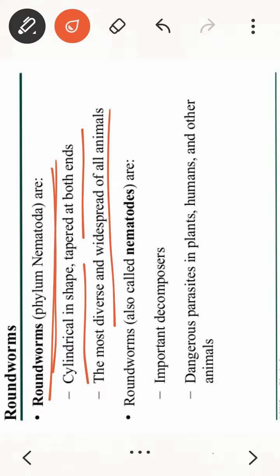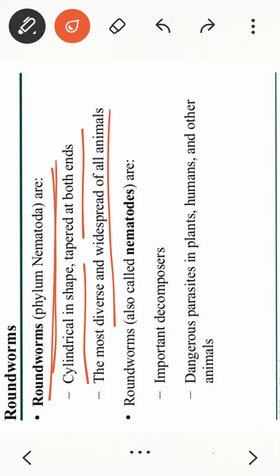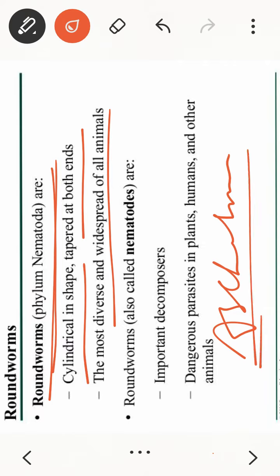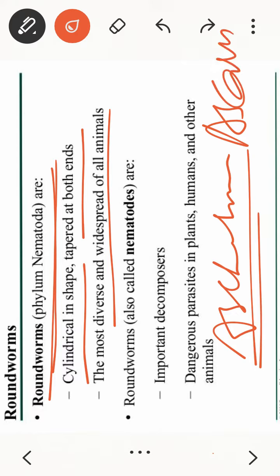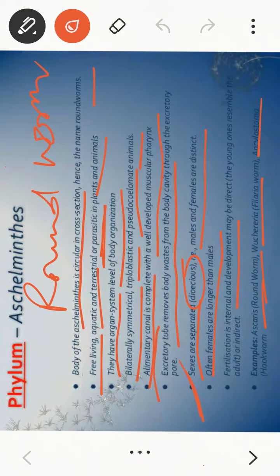Roundworms are important decomposers and are dangerous parasites for plants, humans, and other animals. You have to remember some examples: Ascaris lumbricoides, Wuchereria, and Ancylostoma. You should learn these three examples clearly.